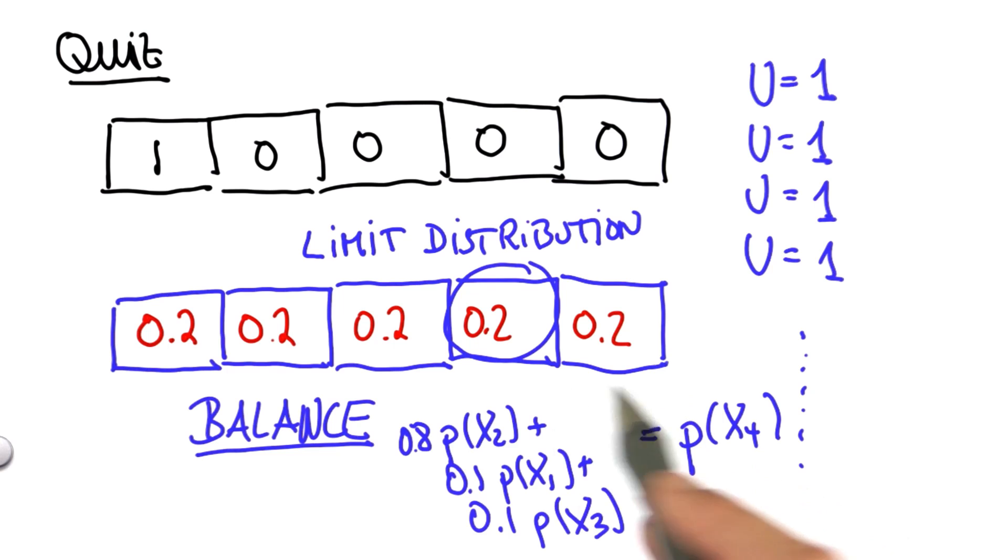There's exactly the same calculation we did before where we asked what's the chance of being x4. Well, you might be coming from x2, x1, or x3, and there's these probabilities 0.8, 0.1, and 0.1 that govern likelihood you might have been coming from there.